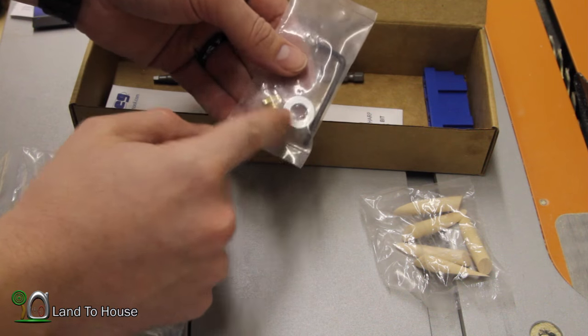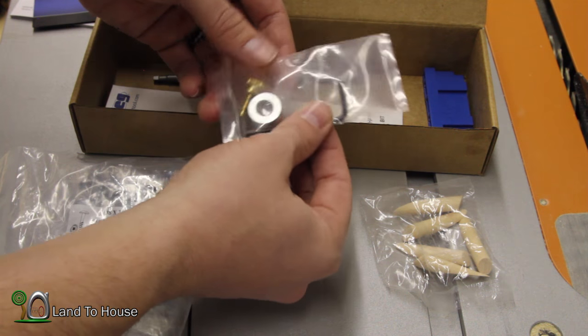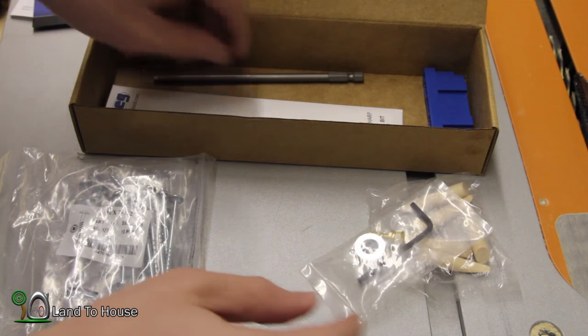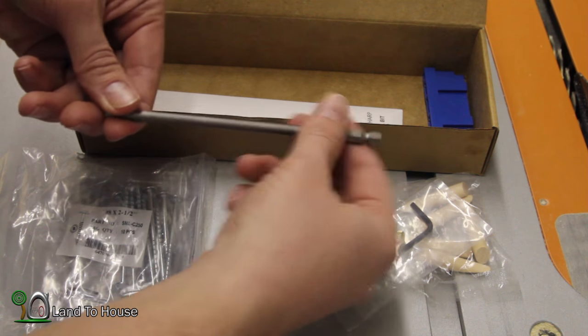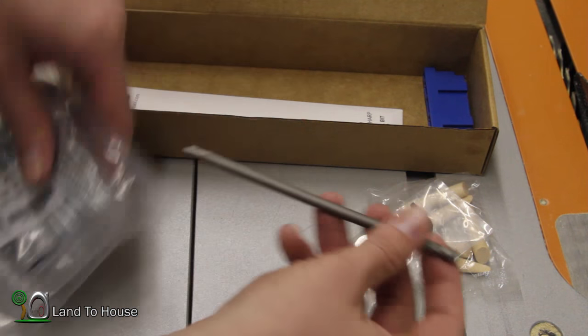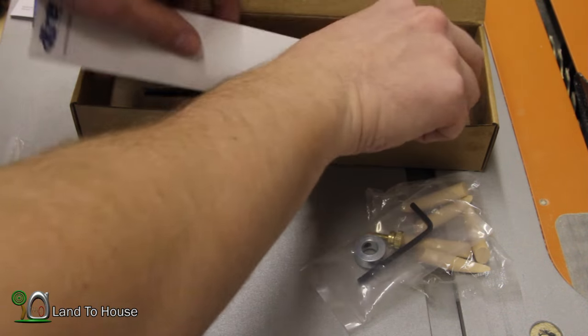I've got the sleeve and the Allen key. I'm not sure what this is yet, but we'll figure it out. This is an extension bit to get these special screws put in.